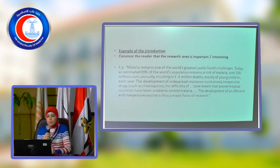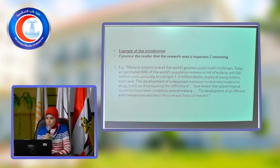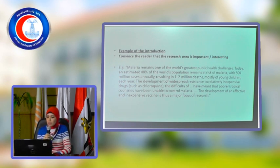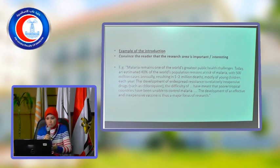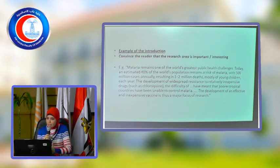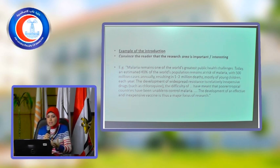For example: malaria remains one of the world's greatest public health challenges. 40% of the world population remain at risk of malaria, there are 500 million cases annually, and around 1-2 million deaths annually. There are also problems with drugs resistant to malaria treatment, like chemotherapy, and challenges for poor tropical countries to control malaria. So there is a need to develop an effective vaccine. You want to convey the importance and magnitude of the problem.